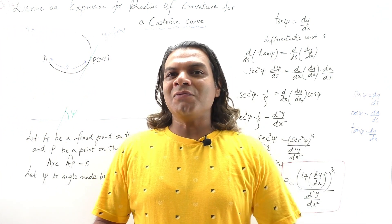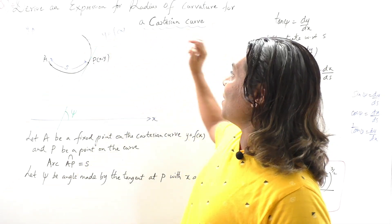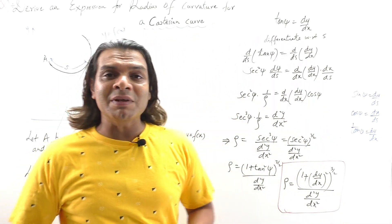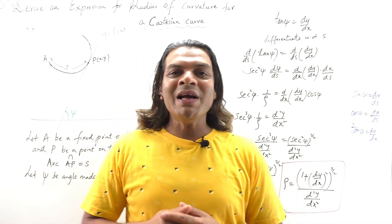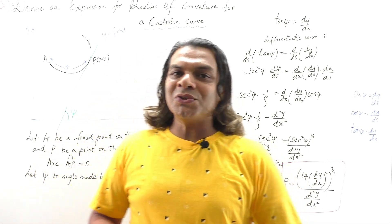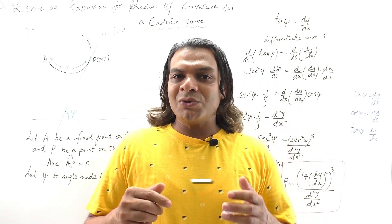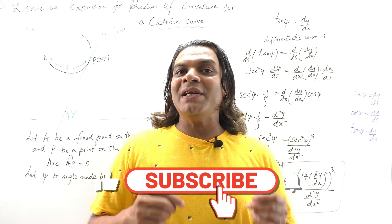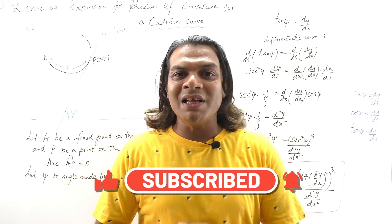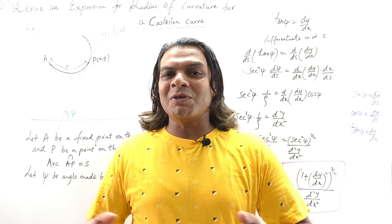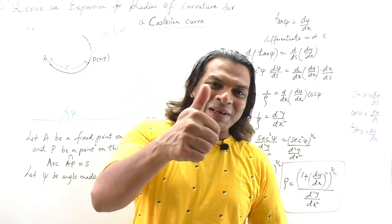In today's video, we discussed what radius of curvature is and derived the expression for a Cartesian curve: ρ = (1 + (dy/dx)²)^(3/2) / (d²y/dx²). I hope you understood the derivation clearly. If you have any doubts, please post in the comments below. In the next video, I will be solving problems on finding the radius of curvature for a Cartesian curve. Till then, stay tuned, subscribe, like, and share. Bye!